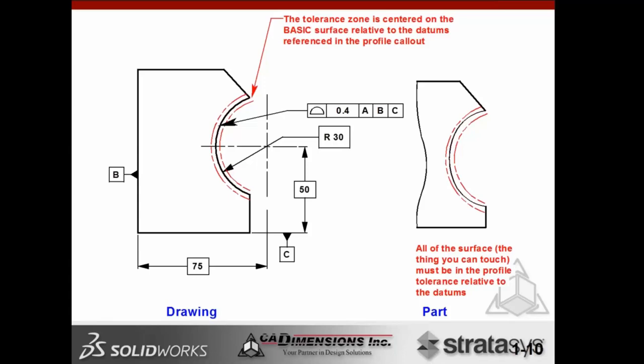With GD&T, we utilize basic dimensions. So now 75 and 50 are basic, and the radius — 30 — is also a basic dimension. That means those are the nominal values, and the tolerance is based on the feature control frame. The feature control frame specifies a profile of 0.4 with respect to datum A primary, B secondary, and C tertiary. The tolerance zone is very clear. This truly simulates the manufacturing method — the machinist is going to plug in 75 basic in his CAM program, not 75 plus or minus some value.